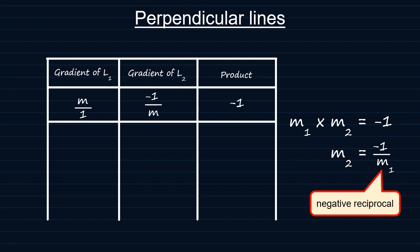So, it also follows that if L1 has a gradient of 2, then L2 should have a gradient of minus 1 half, which is the negative reciprocal since 2 is 2 over 1, so that the product of the gradients is again minus 1.